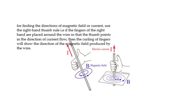For finding the direction of the magnetic field or current, we use the right hand thumb rule. If the fingers of the right hand are placed around the wire so that the thumb points in the direction of current flow, the curling of the fingers will show the direction of the magnetic field. If the current direction is upward, this will be anticlockwise; if this is downward, it will be clockwise. You can check this by how the coil is created and determine the current in the coil.